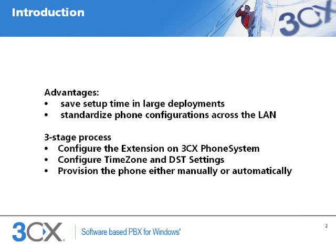Provisioning your phones may help you save setup time even in small deployments. The easiest way to set up a phone for use with 3CX phone system is to use the built-in provisioning functionality. This will allow the phone to configure itself by retrieving a 3CX generated phone configuration file. You can configure your DHCP server to deliver to the phone the location from where it can retrieve its configuration file, resulting in completely automated phone configuration.